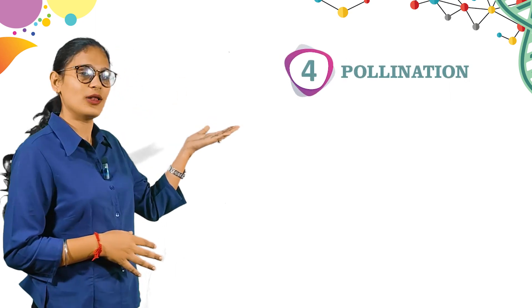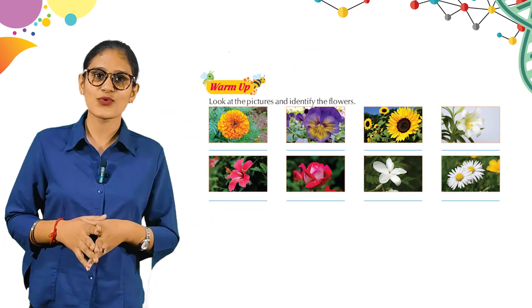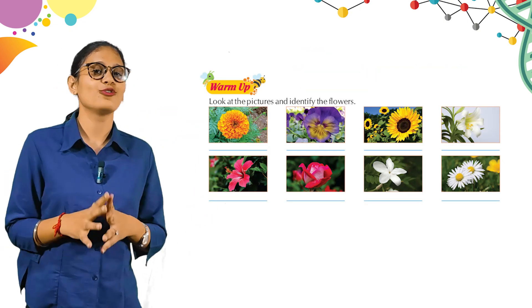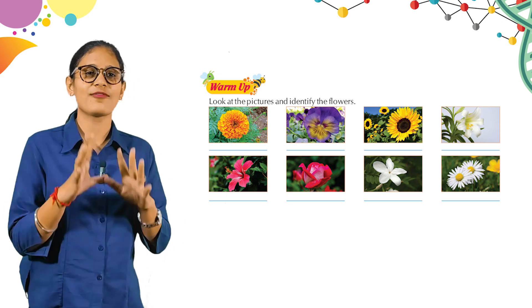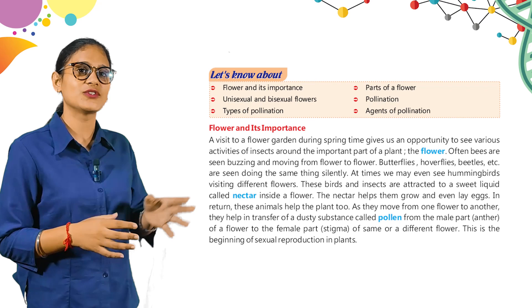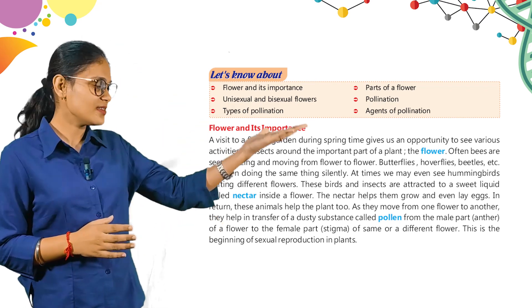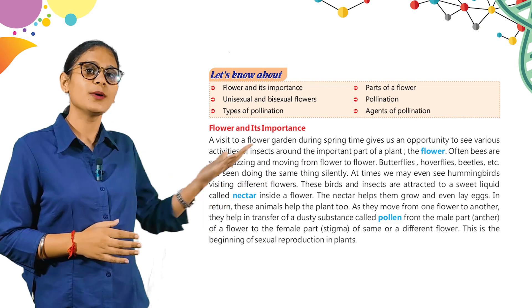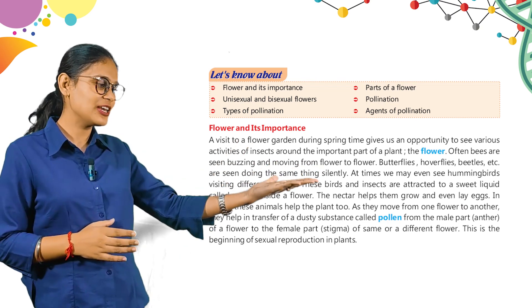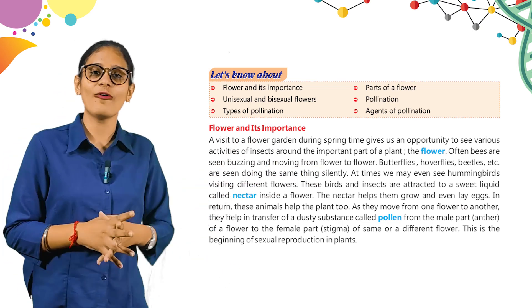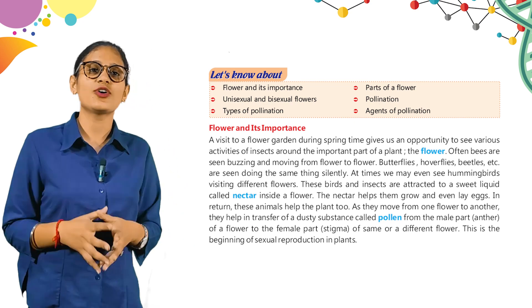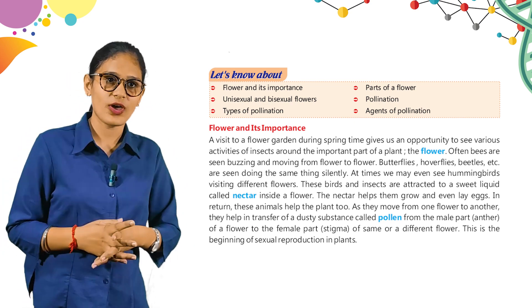Hello kids, today we will discuss chapter 4: Pollination. Here are some warm-up questions — look at the pictures and identify the flowers. You can do it by yourself. The topics we will cover are: flower and its importance, parts of a flower, unisexual and bisexual flowers, pollination, types of pollination, and the essence of pollination.